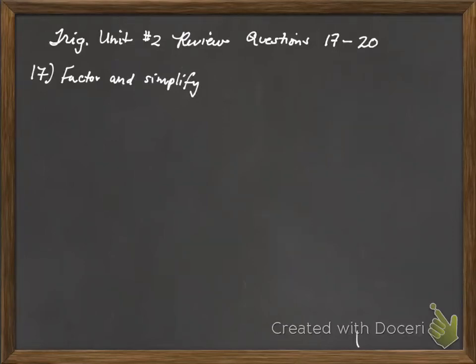This is trig unit number 2 review, questions number 17 through 20. Number 17 reads, factor and simplify, and we have 3 cosine squared theta plus 4 cosine theta plus 1 over cosine squared theta minus 1.